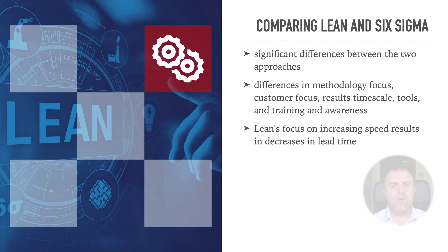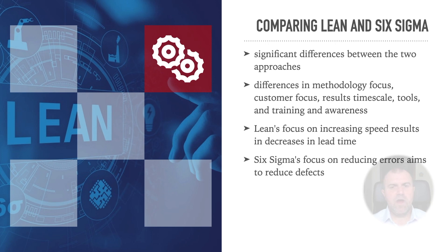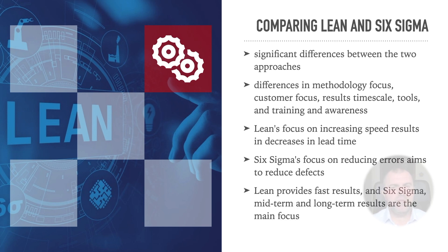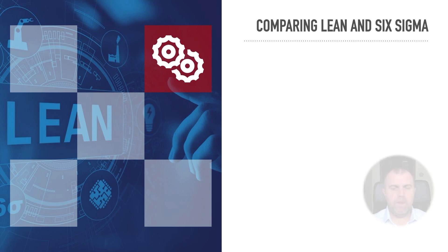Lean's focus on increasing speed results in decreases in lead time — the time between initiation and completion of a process. Six Sigma's focus on reducing errors aims to reduce defects so that products or services are 99.9997% error-free. Although Lean provides fast results, your organization's efforts must persist over the long-term to realize continued improvements. With Six Sigma, mid-term and long-term results are the main focus.